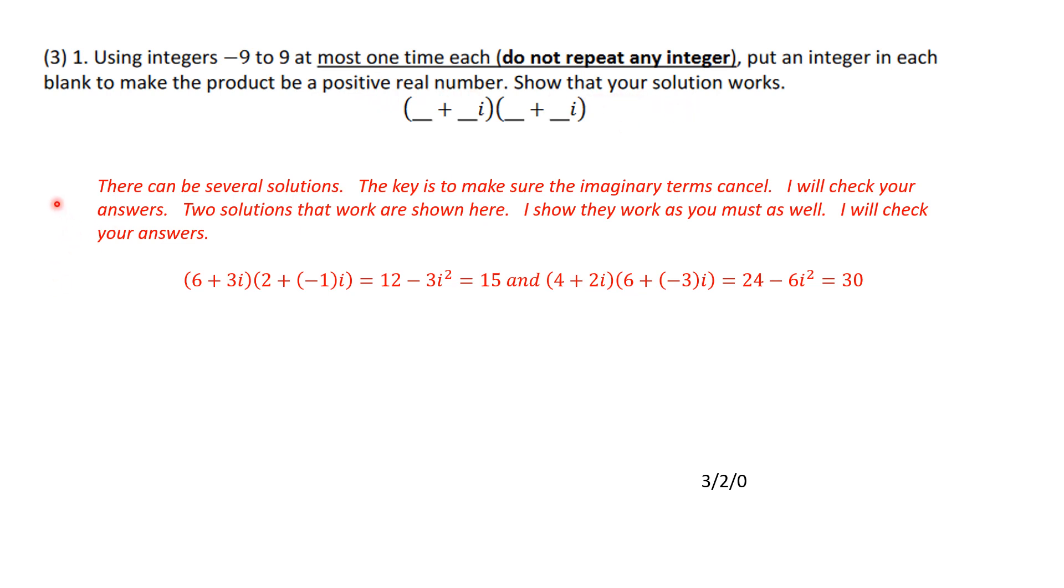Well, there can be several solutions, and the key fact is to make sure that the imaginary terms cancel. I will check your answers to see if your answers are correct, and I am showing two solutions that work here, just to show you that there is more than one. 6 plus 3i times 2 minus i gives you 12 minus 3i squared, which is 15, and so as you see it's a real number. Another solution would be 4 plus 2i times 6 minus 3i is equal to 24 minus 6i squared is equal to 30.